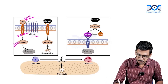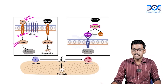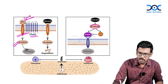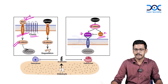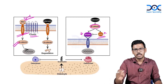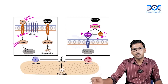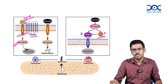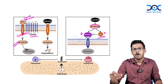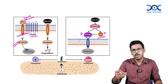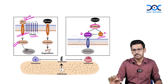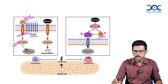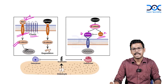Elevated beta-catenin causes an elevation in osteoprotegerin and a reduction in RANK ligand. Elevation of osteoprotegerin suppresses osteoclasts, and reduction of RANK ligand also suppresses osteoclasts, resulting in net bone formation. This is the major function of beta-catenin in WNT signaling.